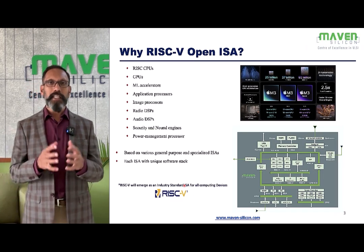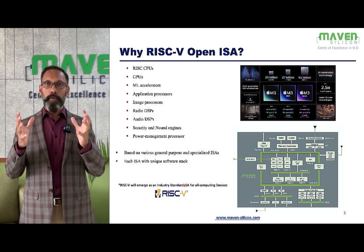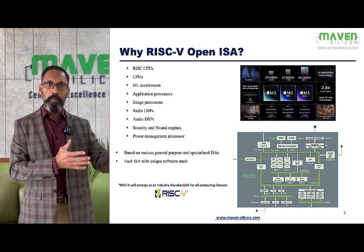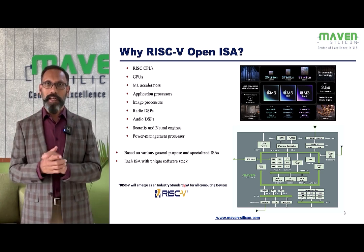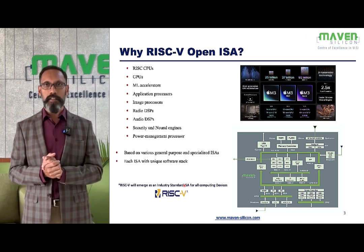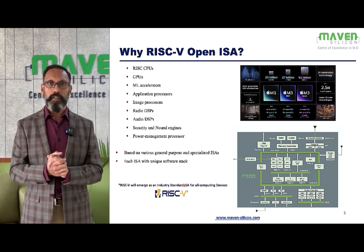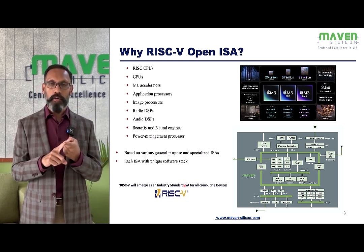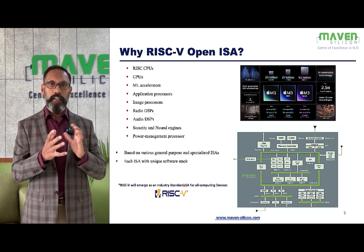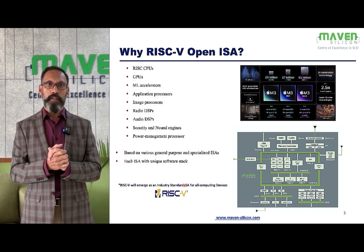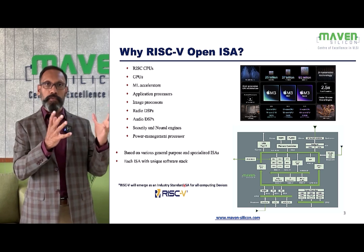Why do we need to upskill engineers on RISC-V? Companies like Apple use RISC processors even for their desktops — ARM processors for their MacBooks. They have designed M-series chips like M1, M2, and M3 series. These OEMs use various kinds of processors: primarily RISC processors, and other kinds like GPUs, accelerators, application processors, image processors, DSPs, security and neural engines, and coprocessors for PMUs.